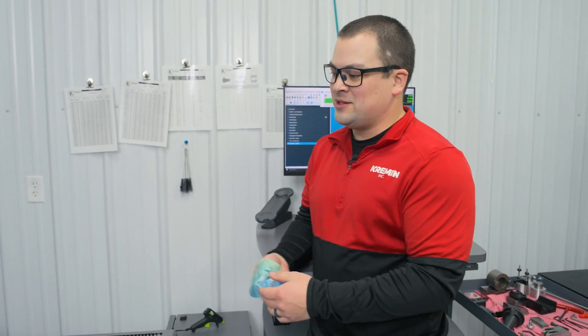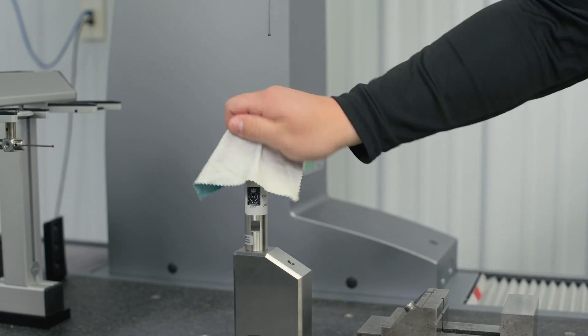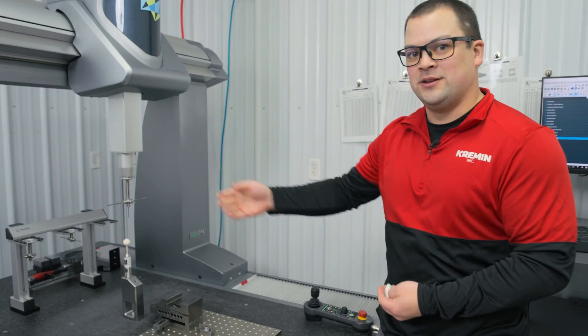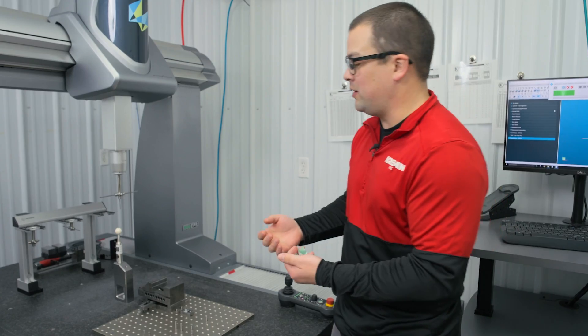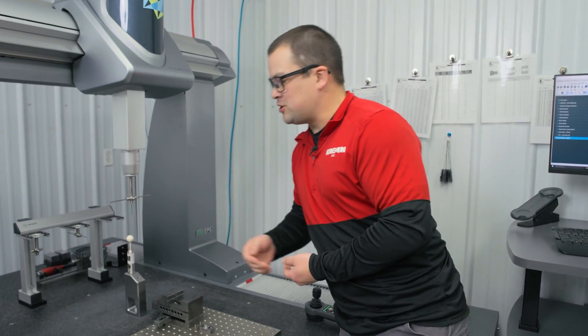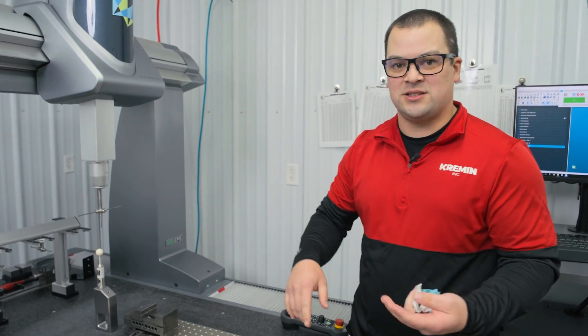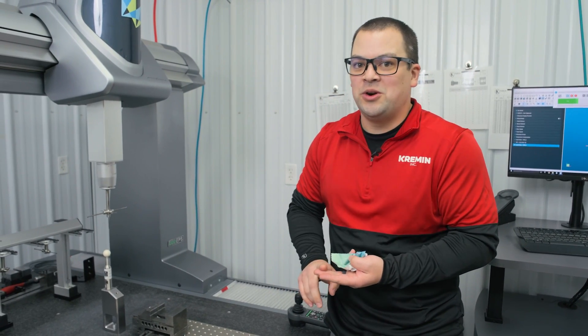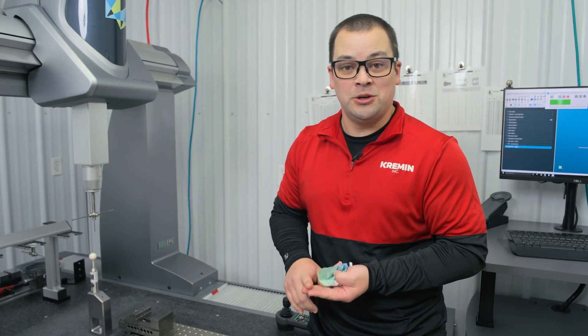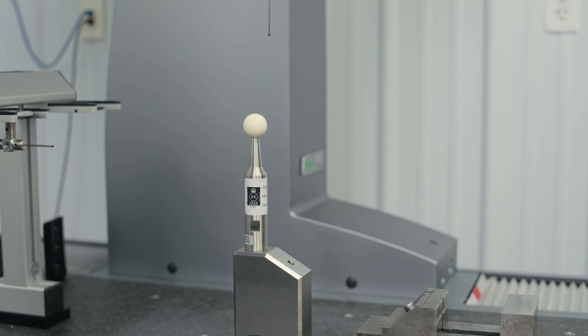One thing to remember is to make sure that your calibration sphere and your probes are clean so you can get the most accurate data you can when you qualify these, calibrate them. Visually inspect your probes, make sure there's no dust, no metal chips, nothing that you don't want on the probes. Clean those off, clean off your sphere, you're good to go.